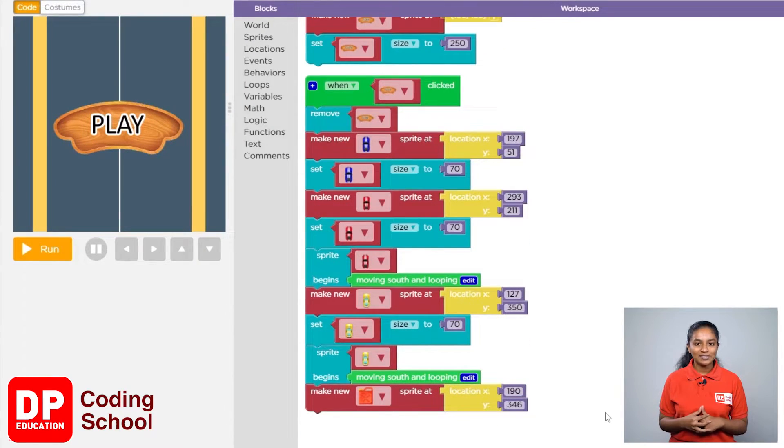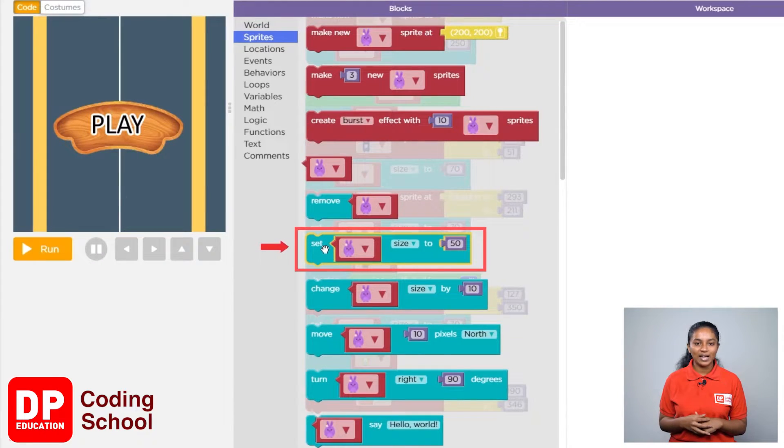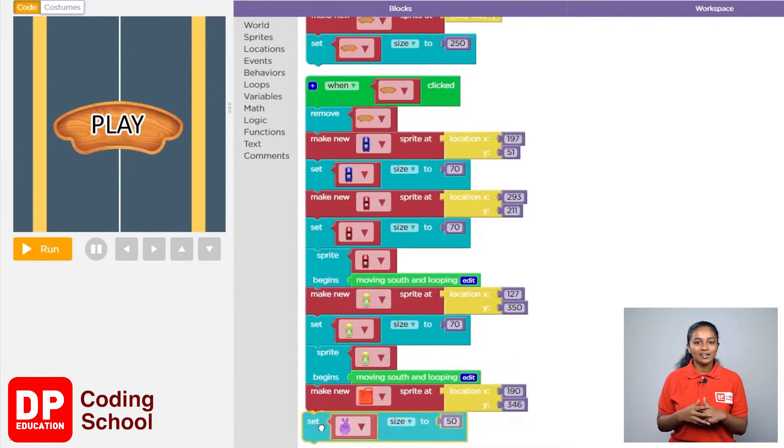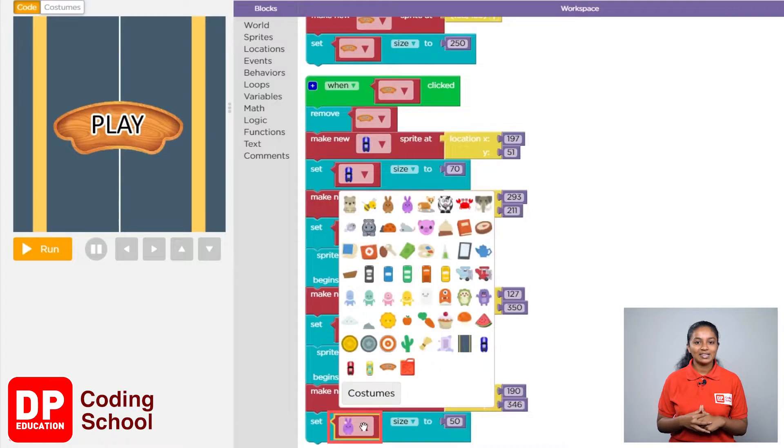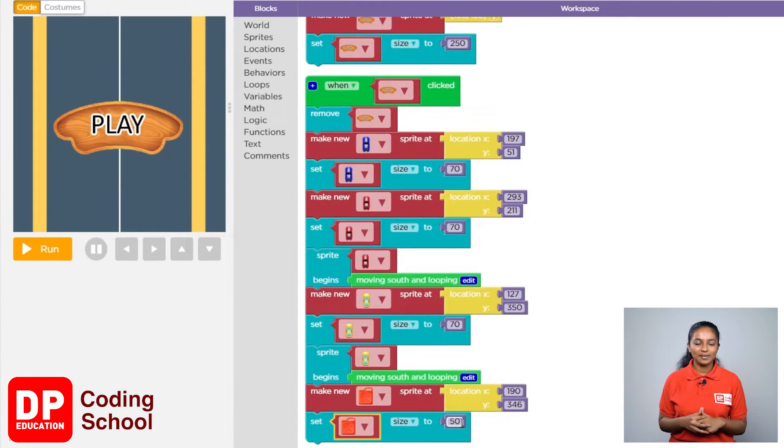Next, let's set the size of the petrol can to 70. Click on Sprites and drag the Set Size To block. Click the small arrow and select the petrol can, then type 70.